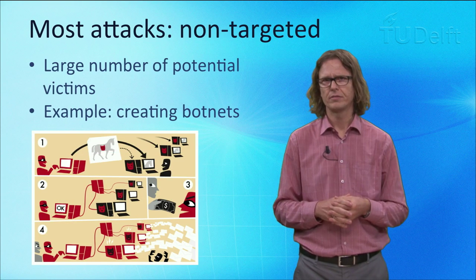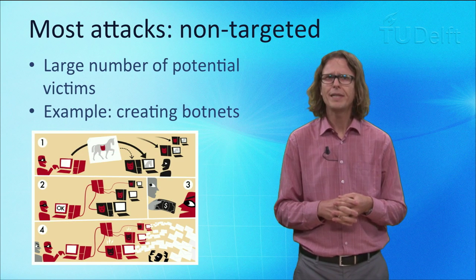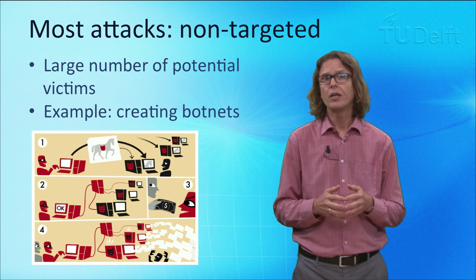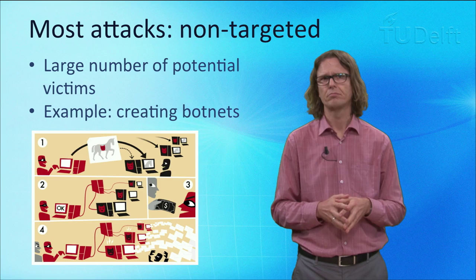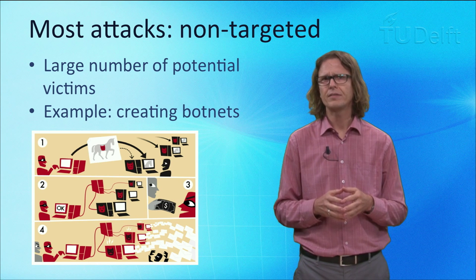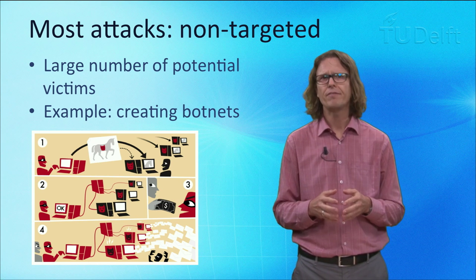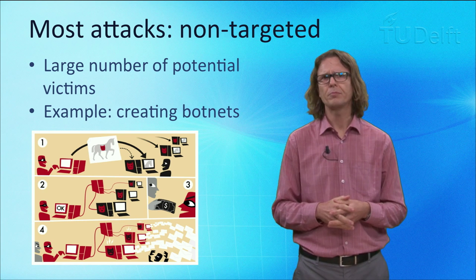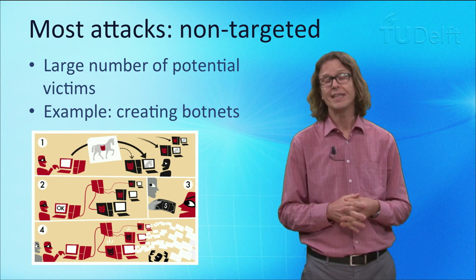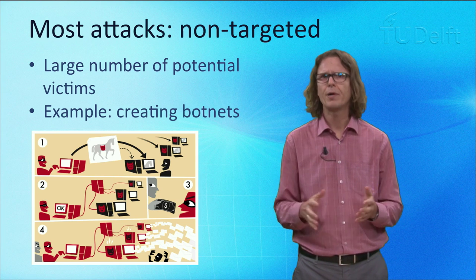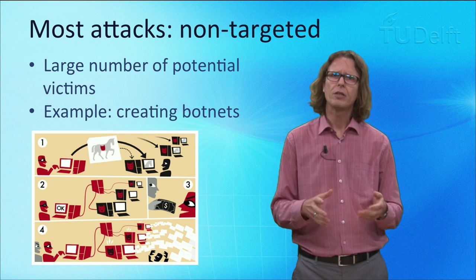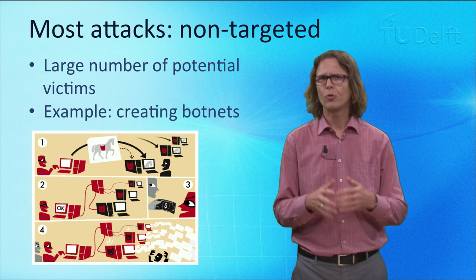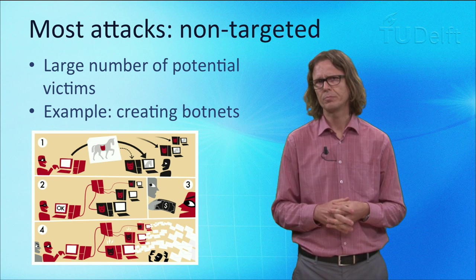Many attacks are non-targeted. What that means is that the attack goes after a large population of victims at once — often millions. For example, some malware is written to find and compromise as many victim machines as possible. The attacker doesn't care who owns the specific machine or where it is exactly located. He just wants to compromise thousands of machines, combine them into a network — a so-called botnet — and use them to send out spam or rent them out to other criminals pursuing other attacks.